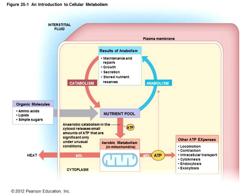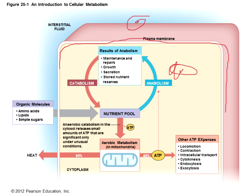This slide shows the entire cell and what's happening inside it. You can see the plasma membrane with the outside and inside of the cell. As a result of digestion, organic molecules — proteins, fats, and sugar — are delivered to the cell. These things we ingest are broken down in the digestive pathway, enter the bloodstream, and then travel to the cells, where the nutrient pool enters.